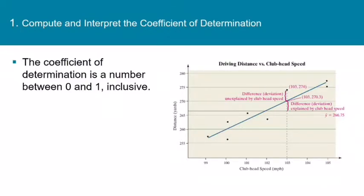So let me tell you a little bit about r squared. First of all, r squared is the coefficient of determination, and it is a number between 0 and 1 inclusive. In other words, 0 ≤ R² ≤ 1.